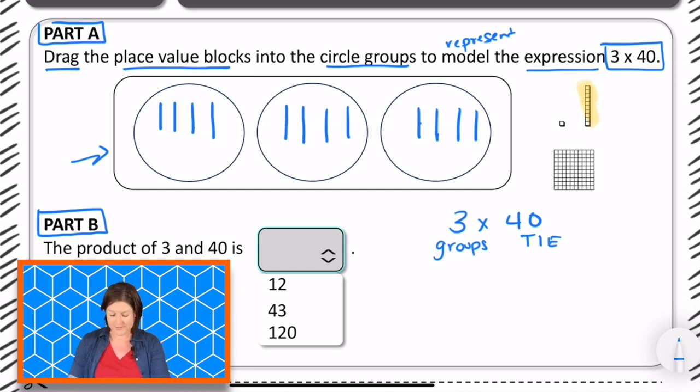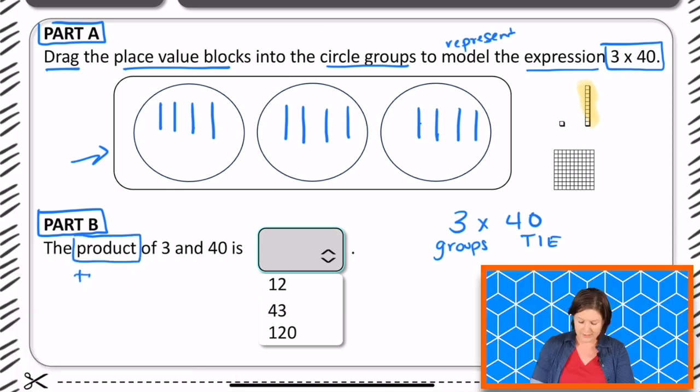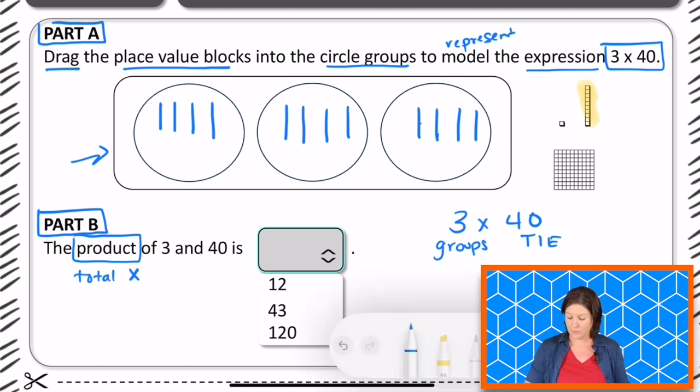Now, part B says, find the product. The product is the total when we multiply. Find the product of 3 and 40. So what is the total when we multiply 3 times 40?